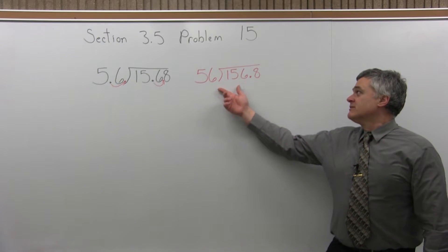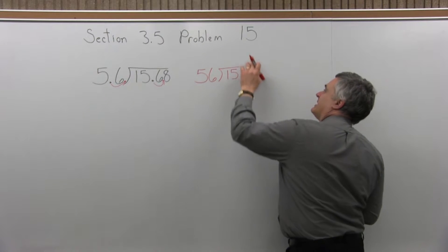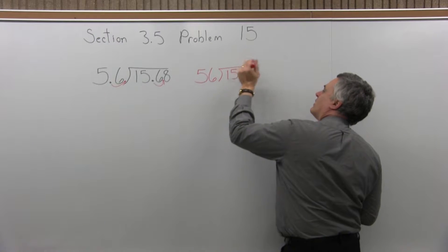So we'll do this division problem. And whatever we get for an answer, that decimal point has to come straight up vertically.